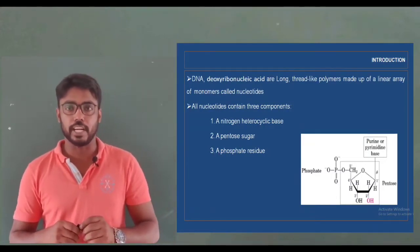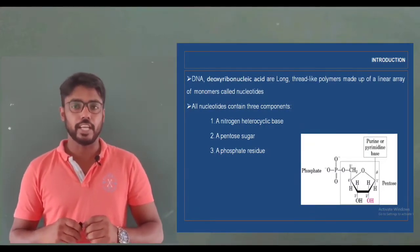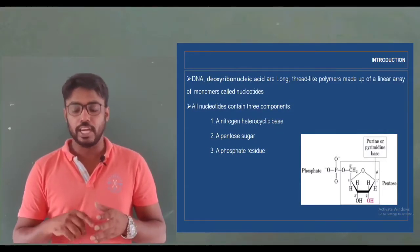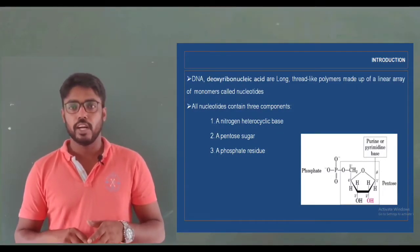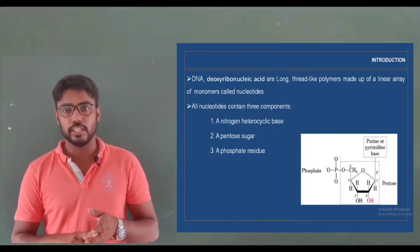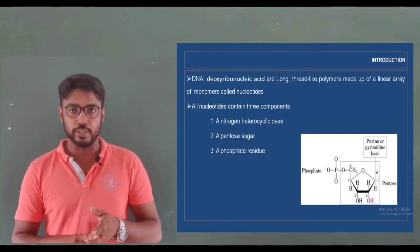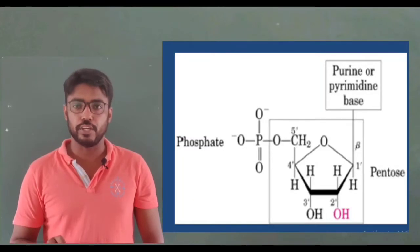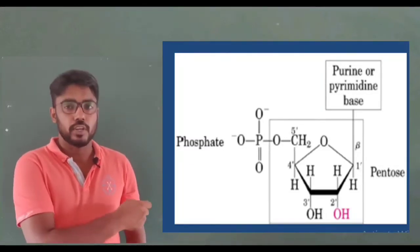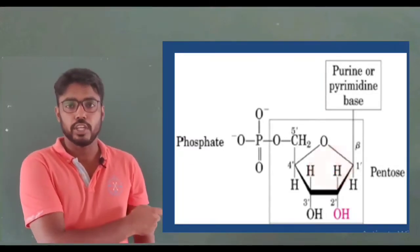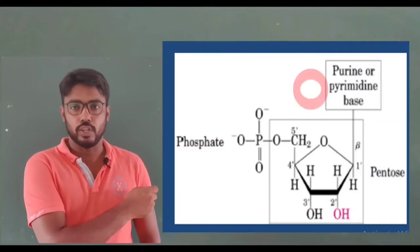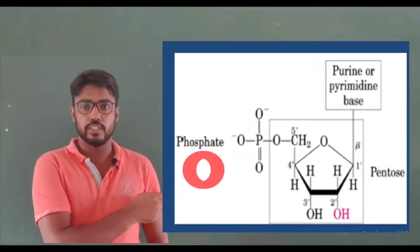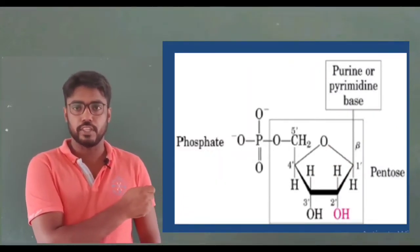These nucleotides mainly contain three compounds. The first one is a nitrogenous base, the second one is a pentose sugar, and the third one is a phosphate group. In this figure, you can see the structure of a nucleotide — there is one pentose sugar, one nitrogenous base, and a phosphate group.